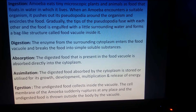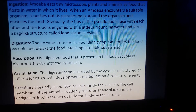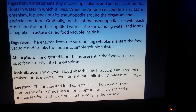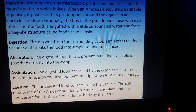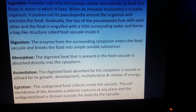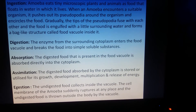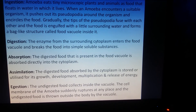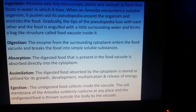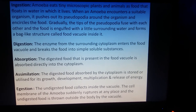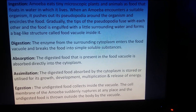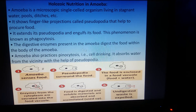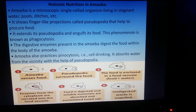Inside the amoeba, enzymes present within the cell break the food into simple soluble substances. The food is then absorbed directly into the cytoplasm, since it has already been digested. During assimilation, the digested food absorbed by the cytoplasm is stored or utilized for growth, development, multiplication, and release of energy.